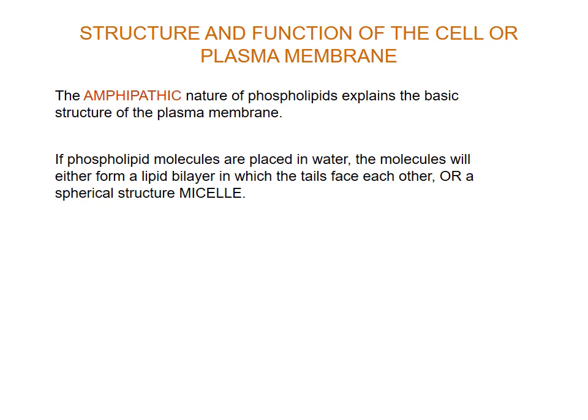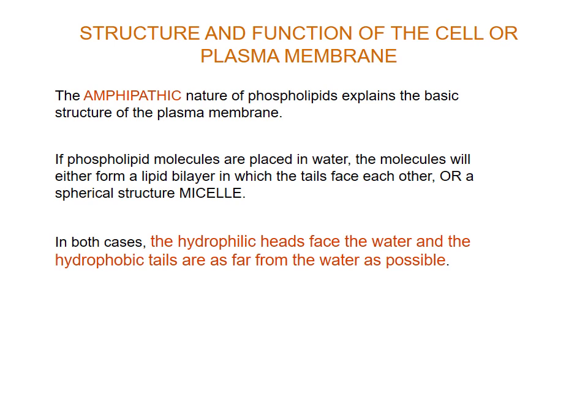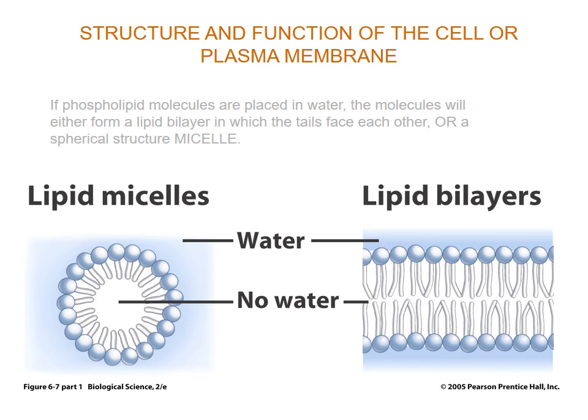Or they may form a spherical or circular structure called a micelle. In either case, what happens is that the hydrophilic or water-loving heads face the water, and the hydrophobic tails are as far away from the water as possible. So if you pour phospholipids into a jar of water, you'll either get a circular structure with no water in the middle, or a lipid bilayer as seen in cells, where there's no water between the tails.